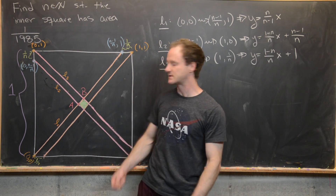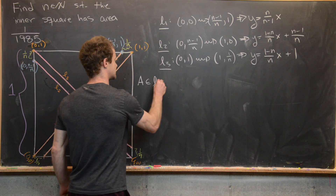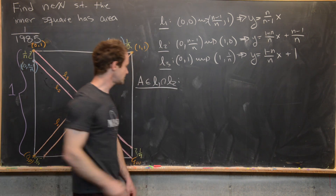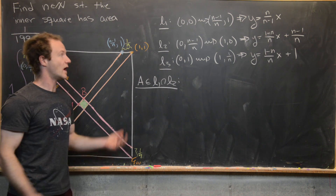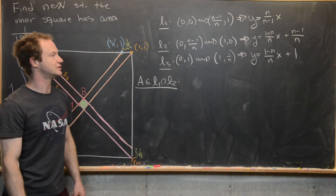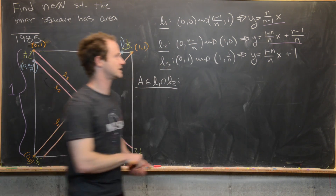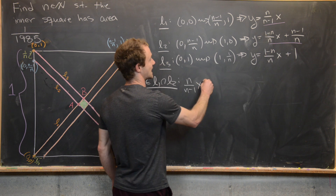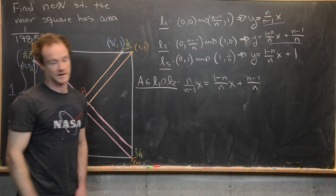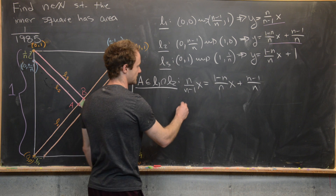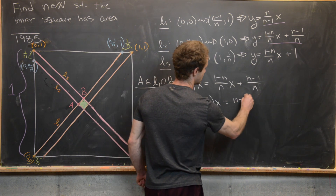Point A is the intersection of L1 and L2. To find its coordinates, we set the two equations equal: n/(n−1) · x = (1−n)/n · x + (n−1)/n. Moving the x term to the left gives [n/(n−1) + (n−1)/n] · x = (n−1)/n.